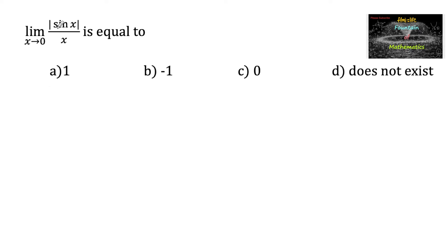We need to find the limit as x tends to 0 of mod of sin x upon x. Let us consider the left limit and right limit of this function.